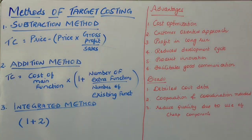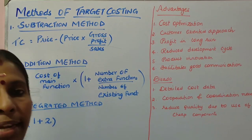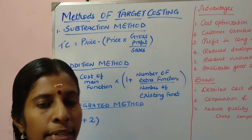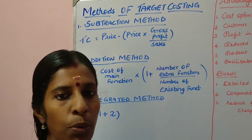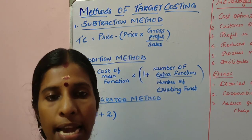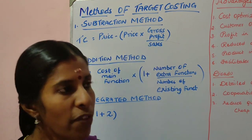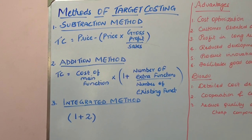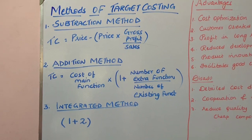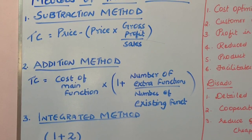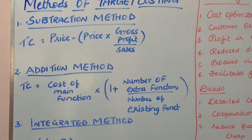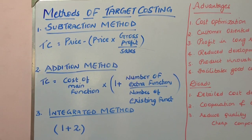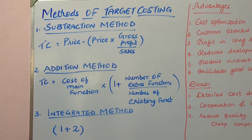The next concept in target costing is the methods of target costing. There are three methods: the subtraction method, the addition method, and the integration method. Under the subtraction method, the target cost is determined by analyzing the market situation as well as the expected competition. It is a method of ascertaining cost by studying the market situation and the competition.